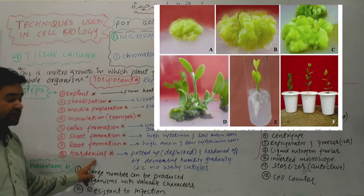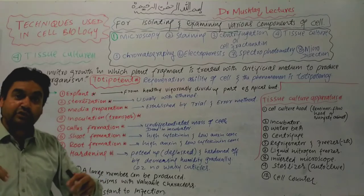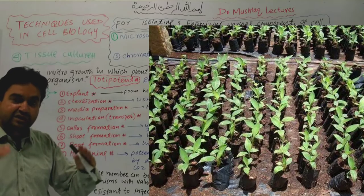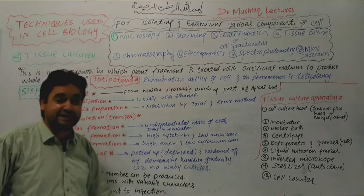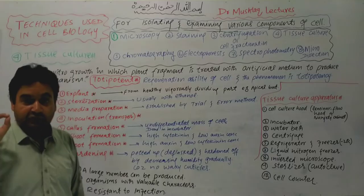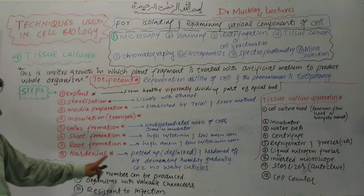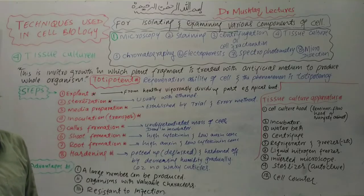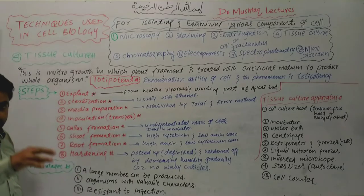The next step is hardening. The plant grown in vitro has high moisture content and an undeveloped cuticle, leading to excessive evaporation when transferred to outside conditions. To avoid this, we harden the plant gradually and slowly, acclimatizing it to reduce water loss and prepare it for normal growth.